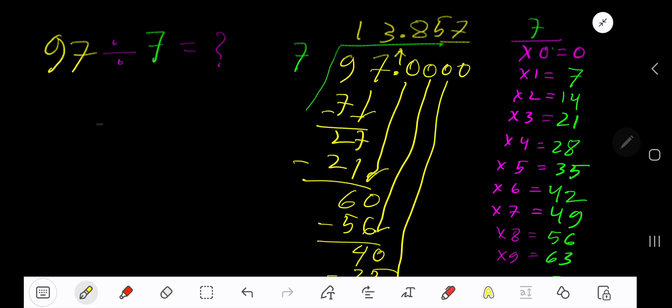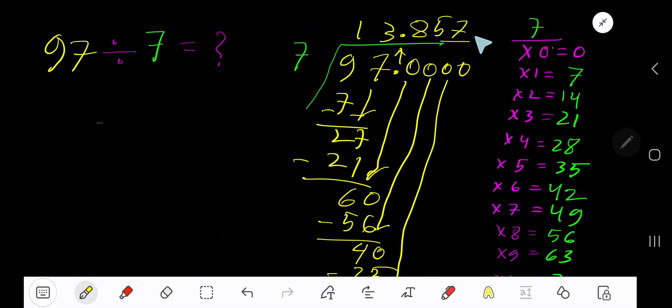You can bring down more zeros, but since we have gotten 3 places after decimal, now you can place dot dot dot to mean that this process is continuing. So our answer is 13.857 dot dot dot.